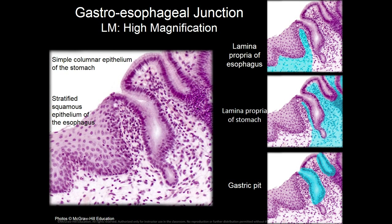There is a change of epithelium between the esophagus and the stomach called the gastroesophageal junction — from non-keratinized stratified squamous epithelium in the esophagus to simple columnar in the stomach. This junction is important because if someone has chronic gastroesophageal reflux, they may convert the esophageal epithelium from stratified squamous to simple columnar, a condition called Barrett's esophagus, which involves a change called metaplasia and can lead to cancer.